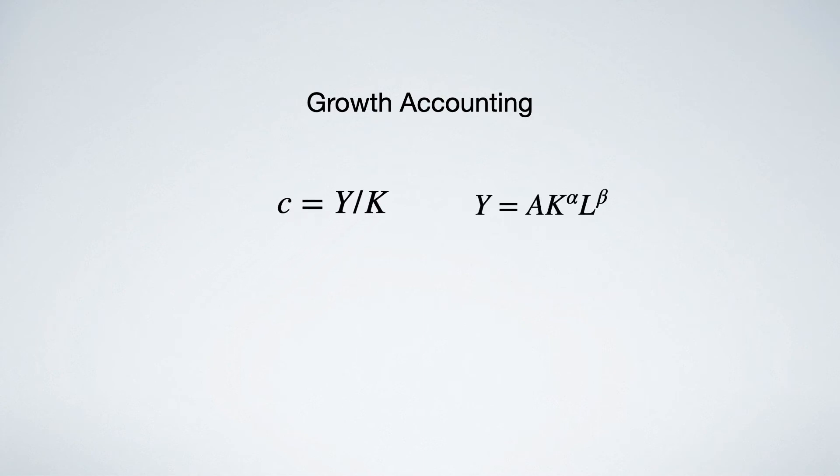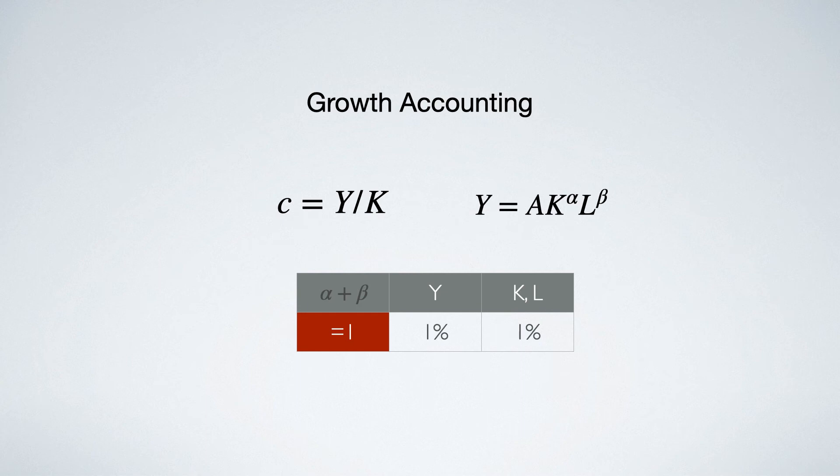For example, if alpha plus beta is equal to 1, a 1% increase of k and l will result in 1% increase of y. Net growth is 0.